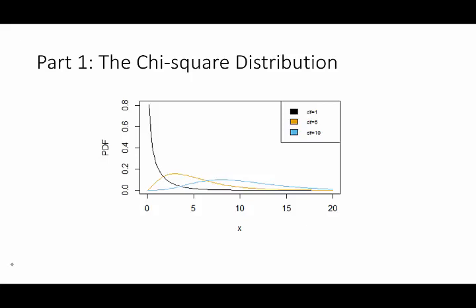Hello and welcome to part one of the four-part inference with the normal distribution series. If you haven't checked out the introduction please do so before watching this video. This video is mainly going to be focused around the chi-square distribution, several examples of which are shown in this plot with different degrees of freedom.